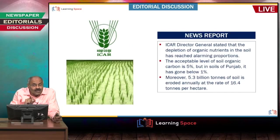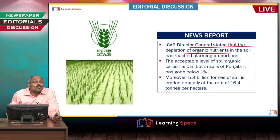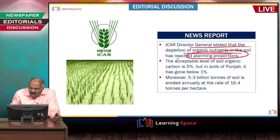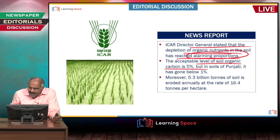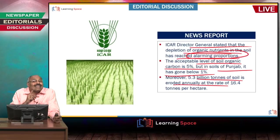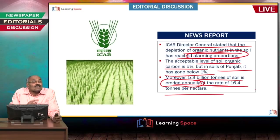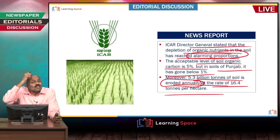This is a very important phenomenon. A recent news report stated that the ICAR Director General said the depletion of organic nutrients in the soil has reached alarming proportions. The acceptable level of soil organic carbon is 5%, but in the soils of Punjab it has gone below 1%. Moreover, 5.3 billion tons of soil is eroded annually at the rate of 16.4 tons per hectare — the topsoil cover most important for agriculture is being lost along with runoff.